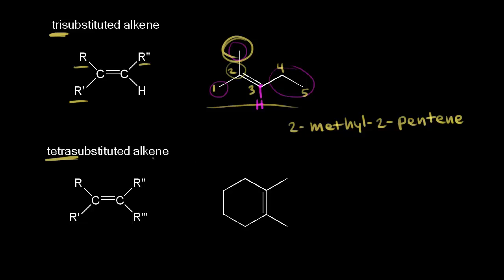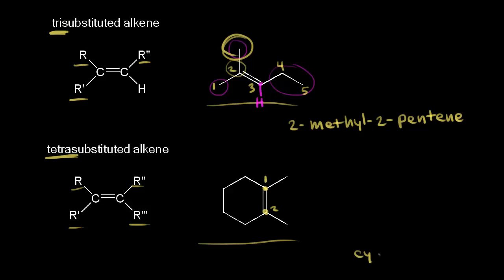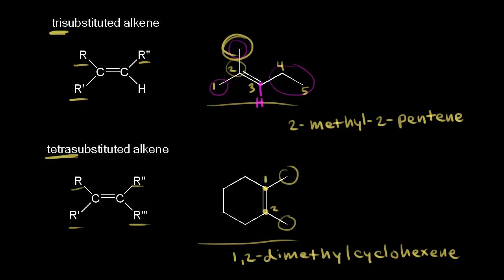Let's look at a tetrasubstituted alkene — R, R prime, R double prime, and R triple prime. This molecule is actually tetrasubstituted. Let's name it first: this would be carbon one, following the double bond for carbon two, so we have a cyclohexene derivative. We have a methyl group coming off carbon one and a methyl group coming off carbon two, so this would be 1,2-dimethylcyclohexene.